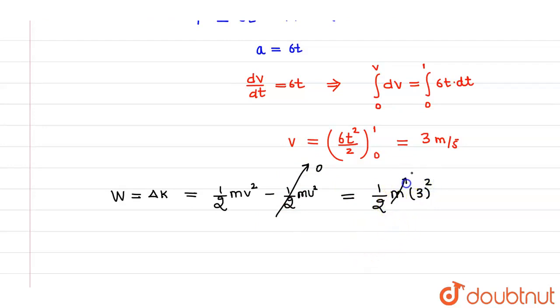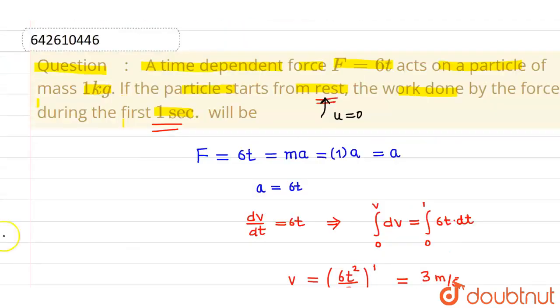So this will come out to be 9 by 2, which is 9 by 2 joules. This is the work done in the first one second. I hope you understood, thank you.